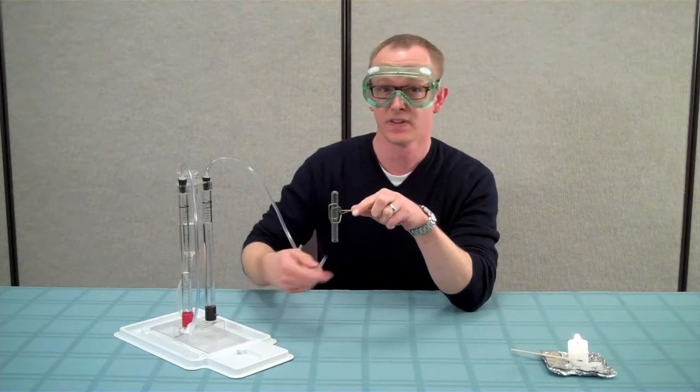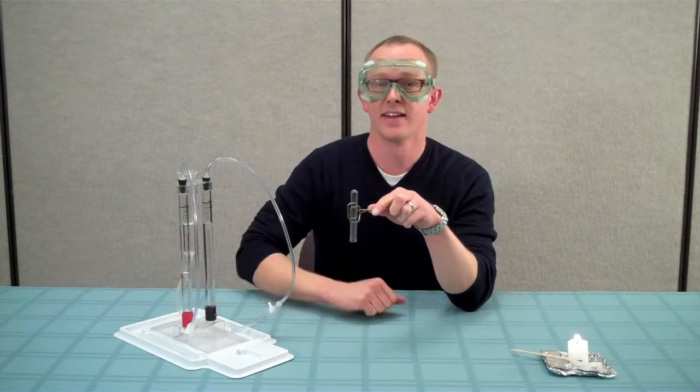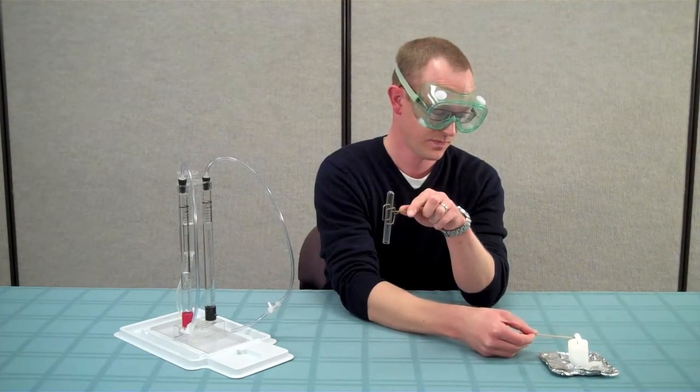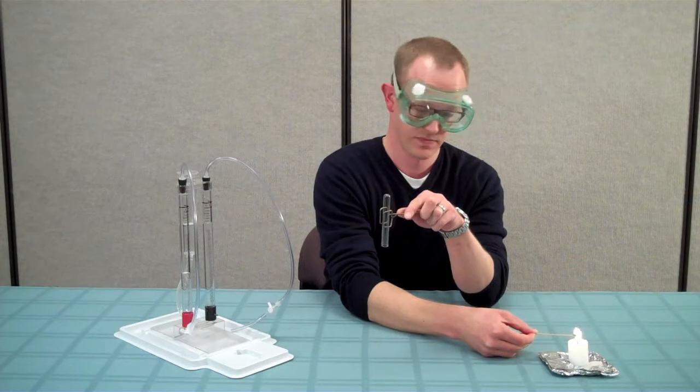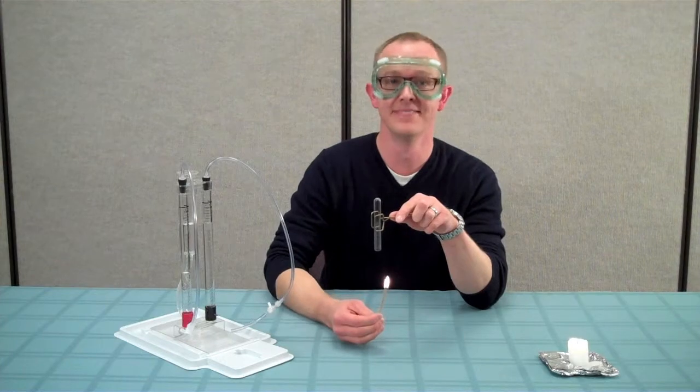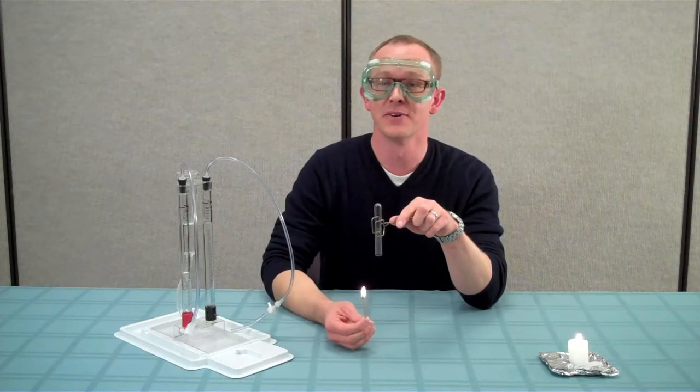Remove the tube and take a burning splint and insert it into the mouth of the test tube. Now, we should hear a noticeable pop sound. The gas that was in the storage column must have been hydrogen.